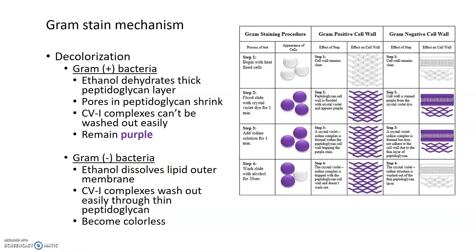Gram negative bacteria respond differently to the ethanol decolorizer because of their different cell wall structure. Gram negatives have a lipid outer membrane on the outside of their thin peptidoglycan layer, and the ethanol simply dissolves that outer membrane, leaving the thin layer of peptidoglycan exposed. Since that layer is so thin, the crystal violet iodine complexes have no trouble diffusing through and are lost and washed out, so the gram negative bacteria become colorless. In the decolorization step, gram positives stay purple while gram negatives lose all their color.